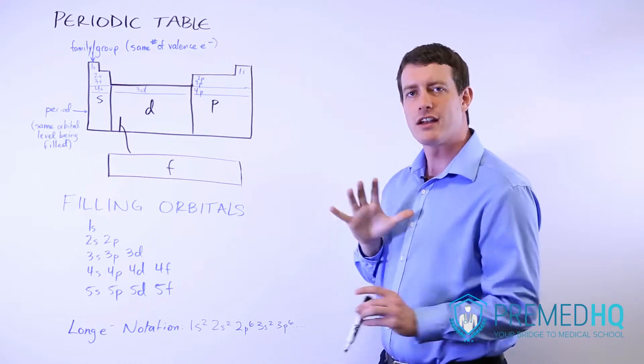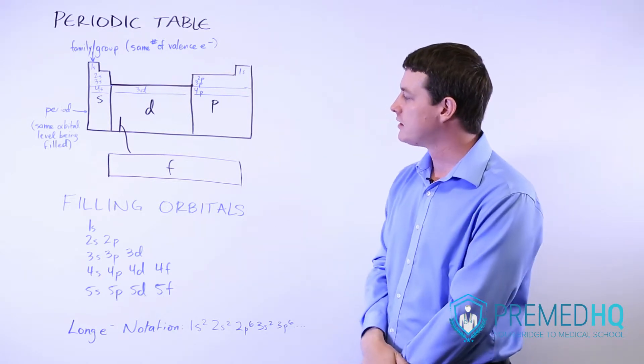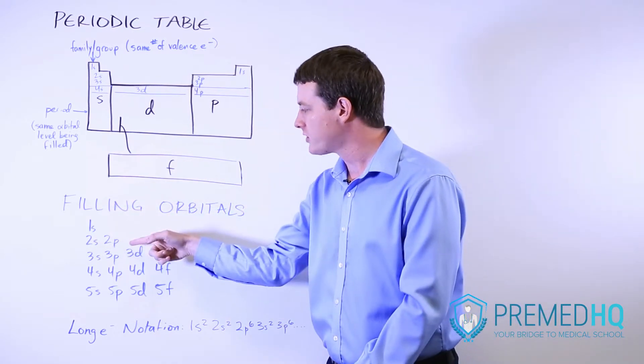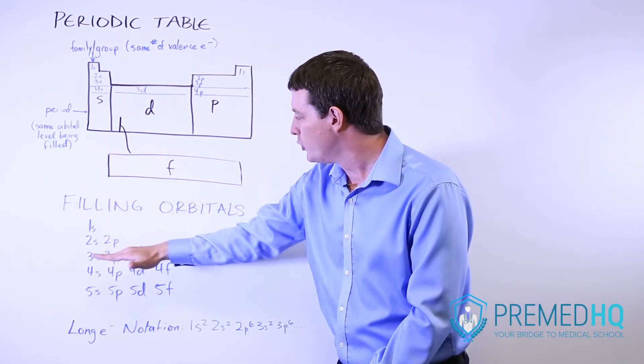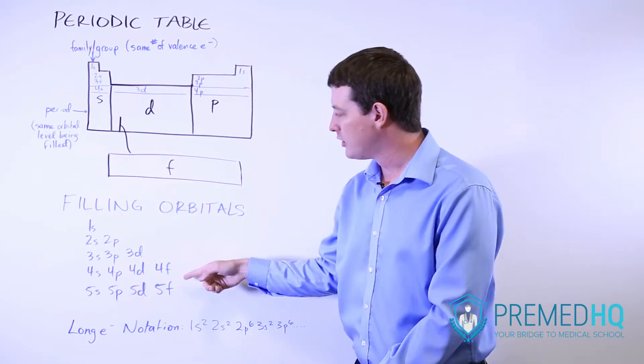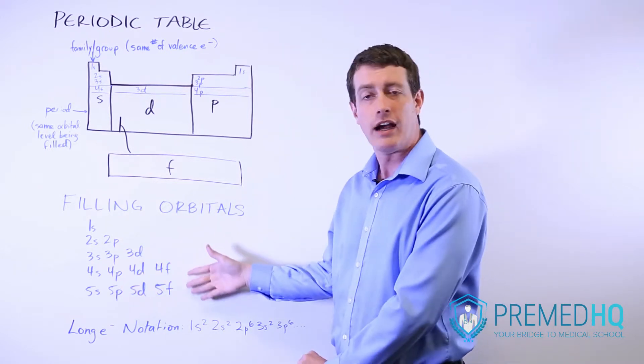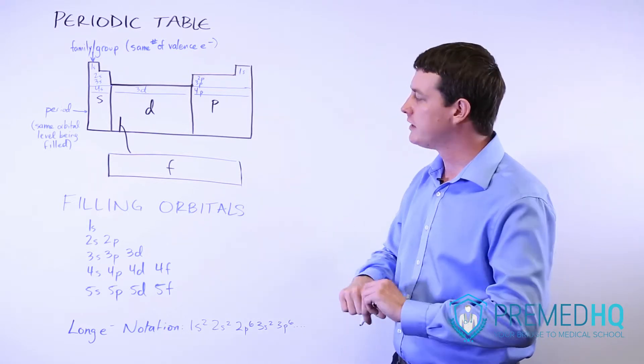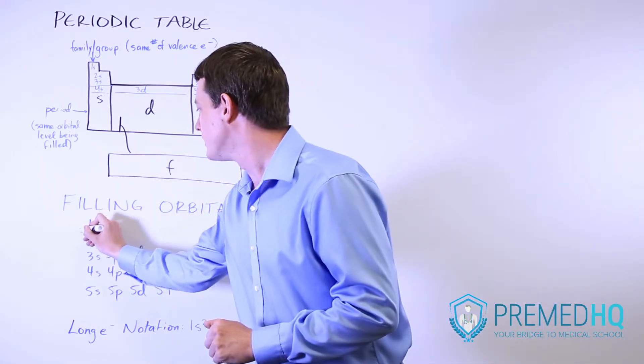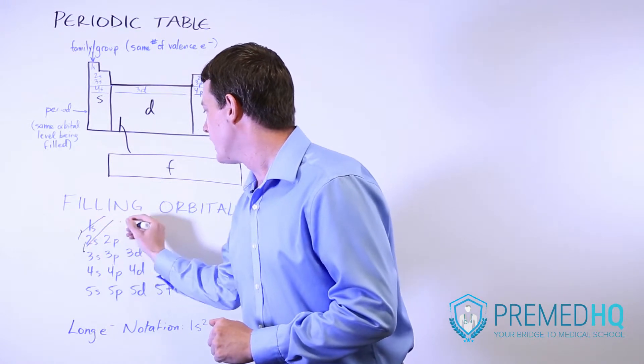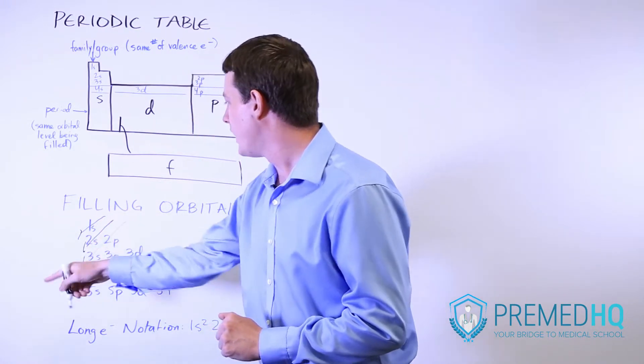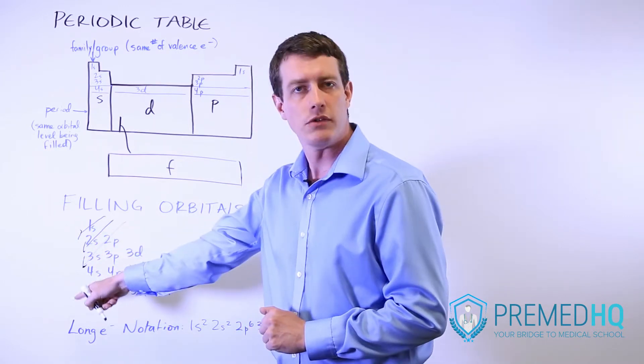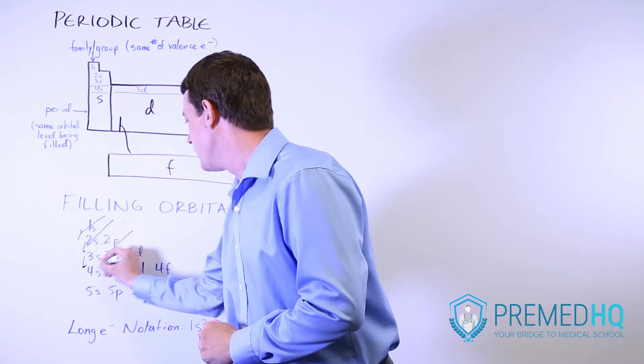The best way to keep track of the order in which orbitals are filled is to draw a triangle like this, where you go from 1s, 2s, 2p, and each row down you add another orbital level until you get to f where there is nothing beyond that. And then if you're trying to figure out what order the orbitals fill in, you simply draw diagonal lines like that. So what you'll notice here is that 1s is filled first and then 2s and then you fill 2p before you fill 3s and so on, and you can just continue to draw these diagonal lines.